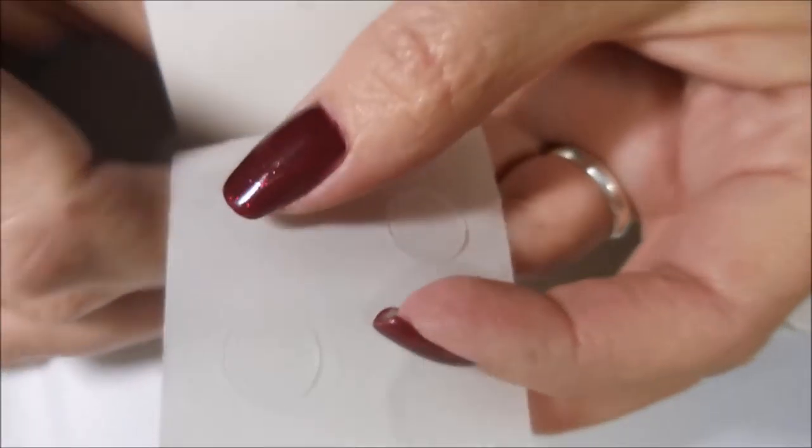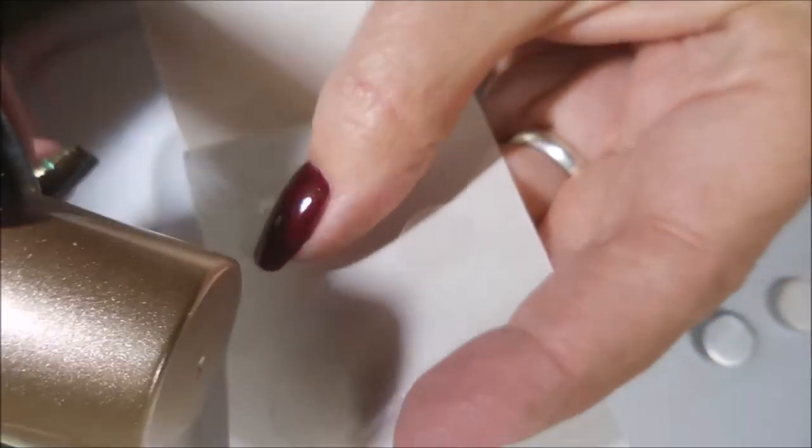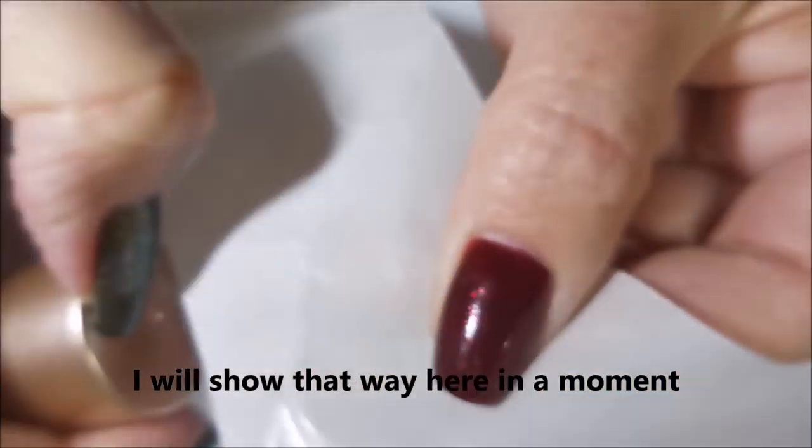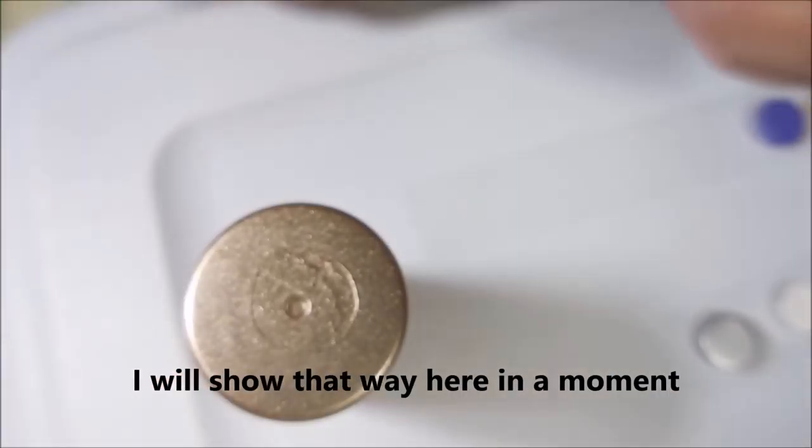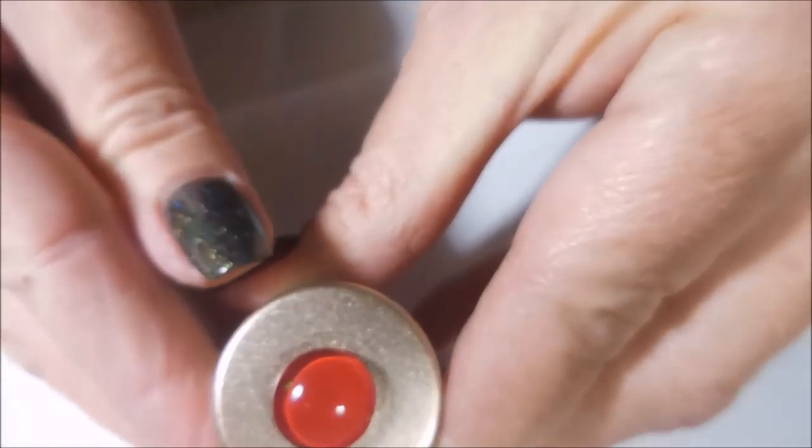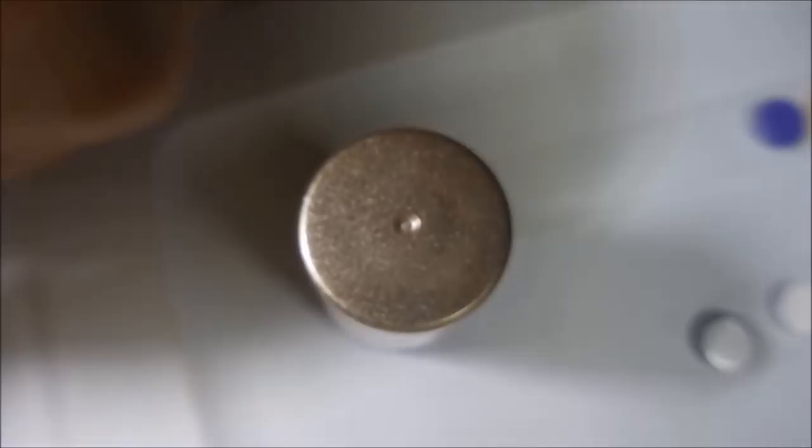You can also take the cabochon and stick it onto the glue dot and pull it up and then adhere it to the top of the bottle. I've done it both ways and I don't really have a preference. You can do it either way, whatever feels most comfortable to you. You're just going to want to press it down really good.